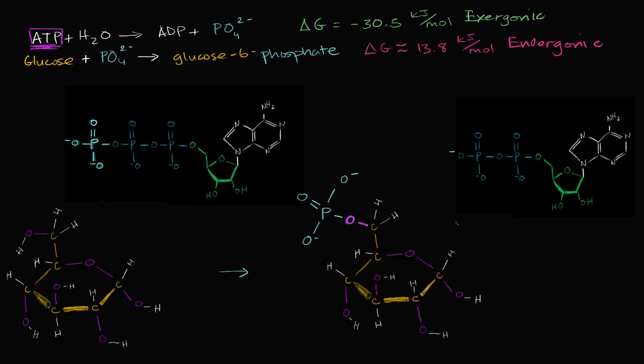So what we can do is we can couple these two reactions. And so when we couple the two reactions, we have ATP plus glucose reacting.